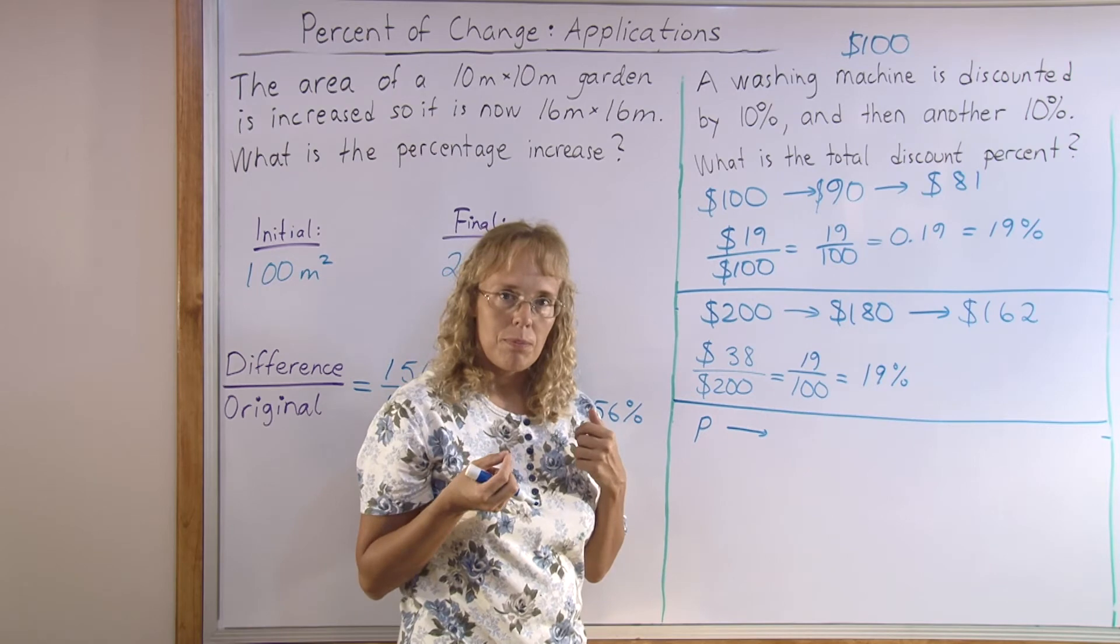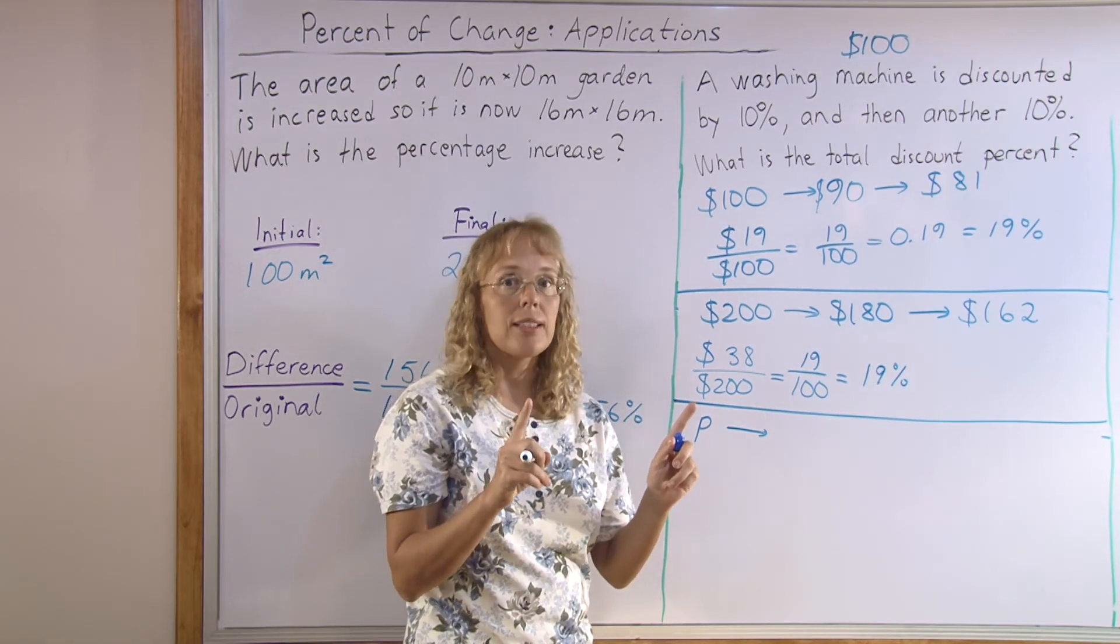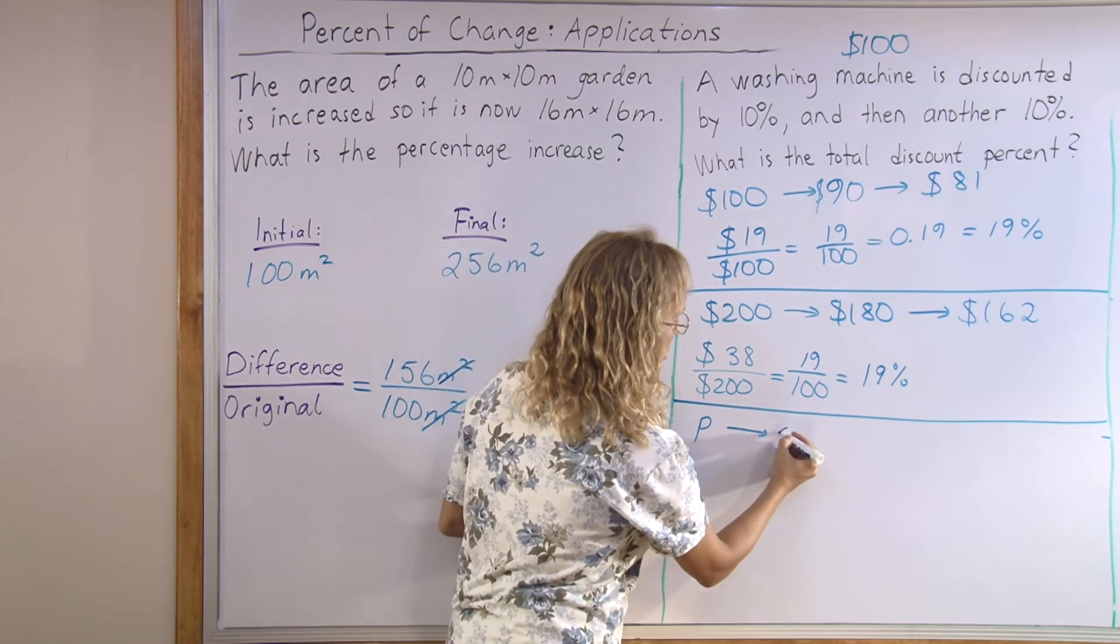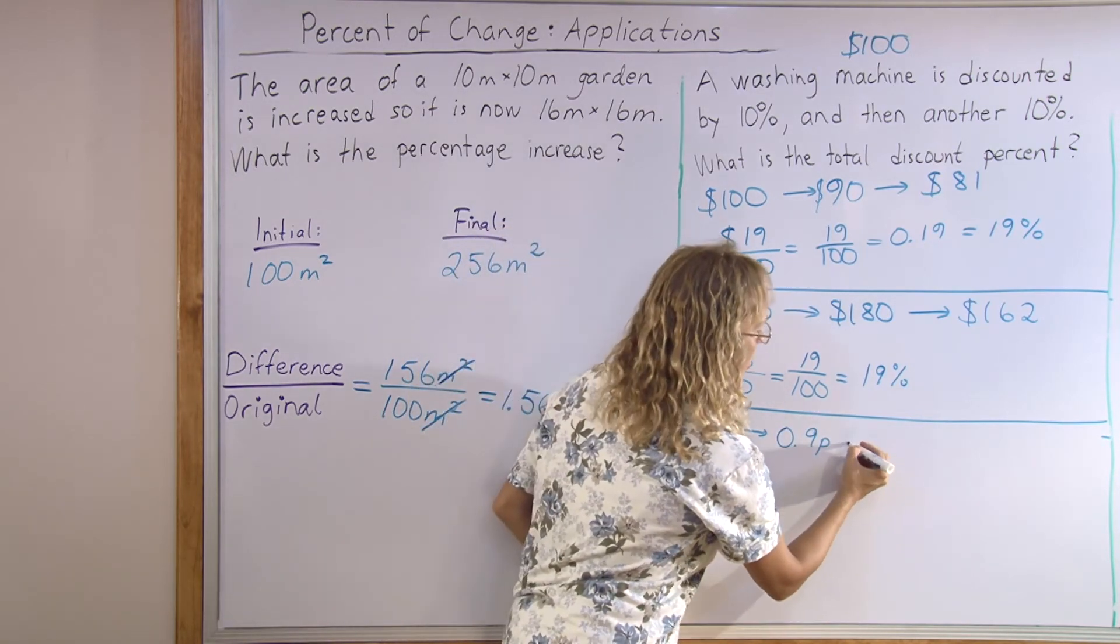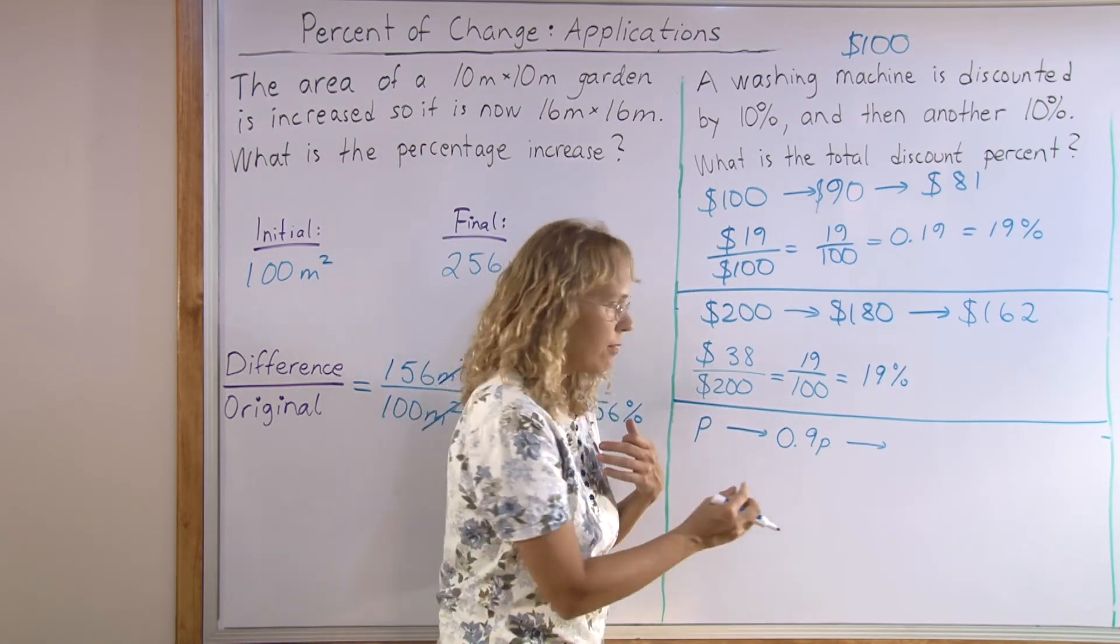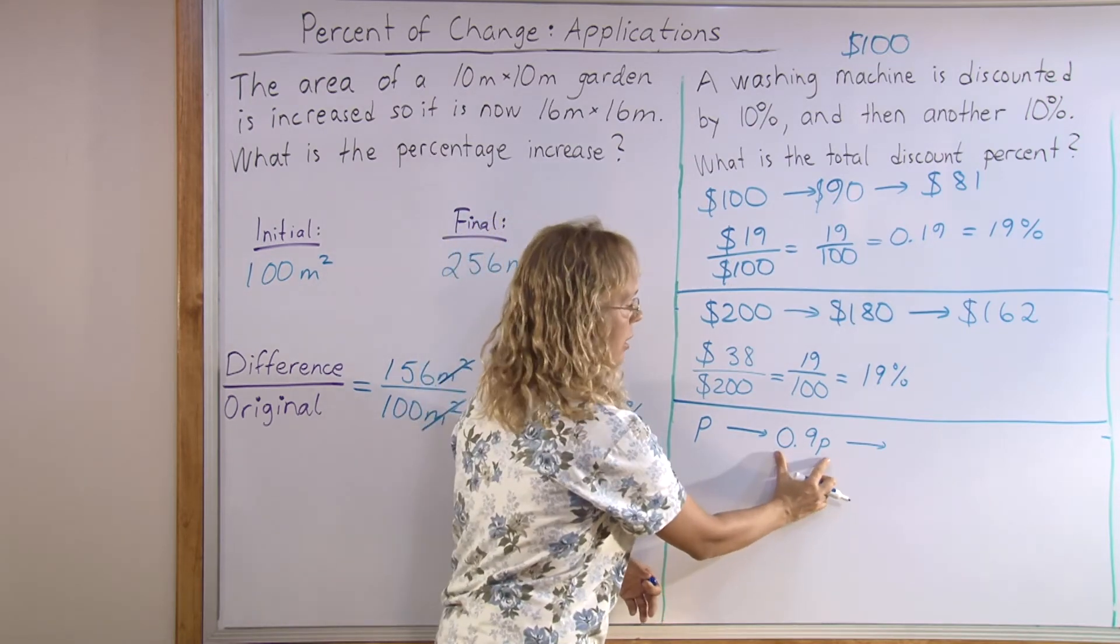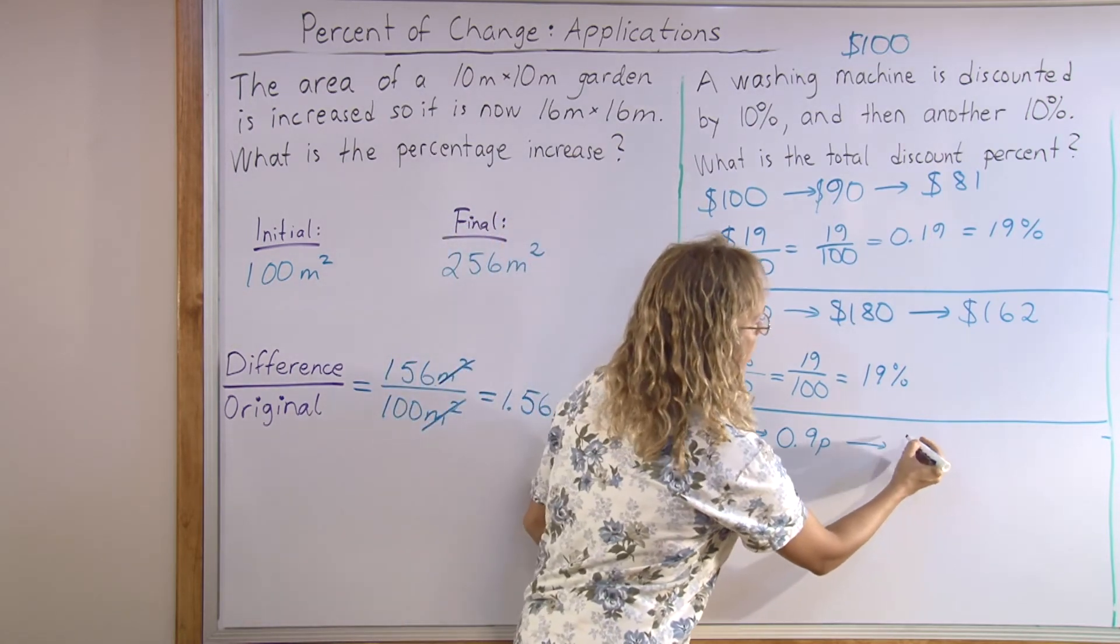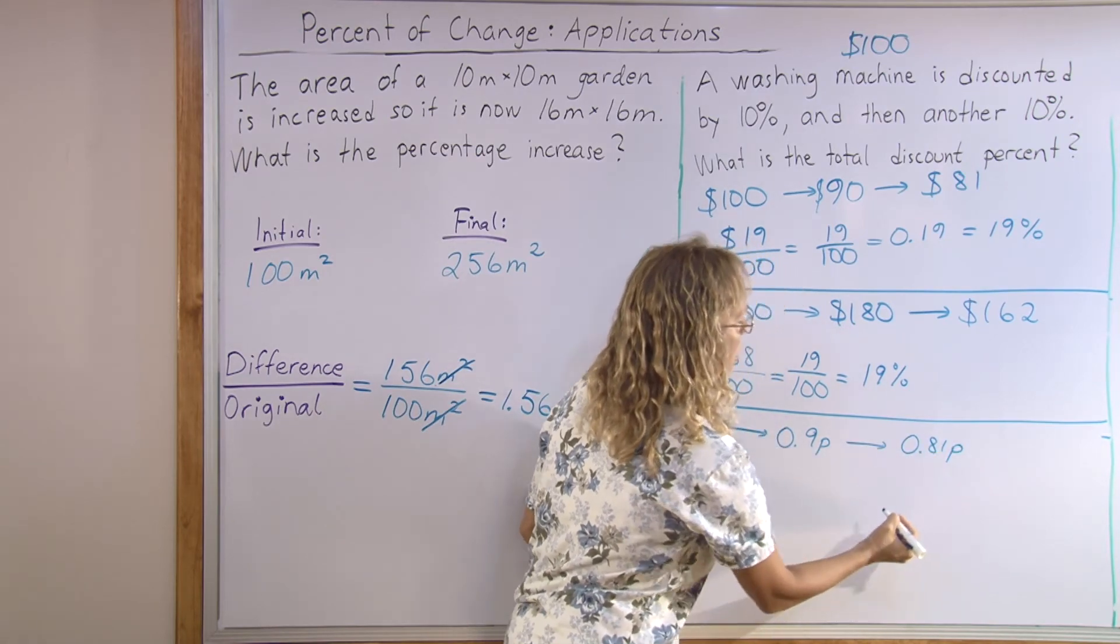And then after the discount, 10% of the P is taken off, 10% of the price. So, 90% of the price is left, which is 0.9P, right? And then it is discounted another 10%. That means that 90% of this is left. So, we multiply this quantity here by 0.9, which then gives us 0.81P. That's the final price.